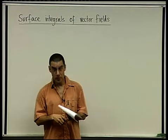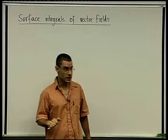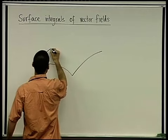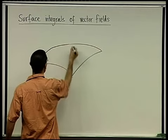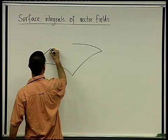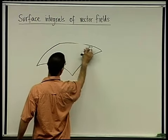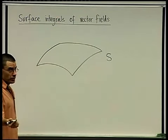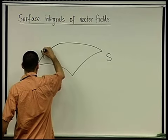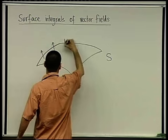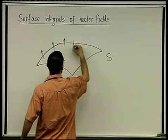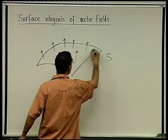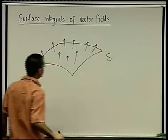Our next topic is the surface integral of a vector field. We have some surface — let's call it S — and there's a vector field involved. We draw vector fields by plotting an arrow at every point, which gives the direction and magnitude of the field. So this is F.